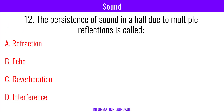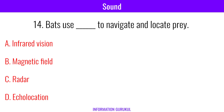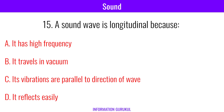The persistence of sound in a hall due to multiple reflections is called reverberation. Which device is used to measure sound level? Audiometer. Bats use echolocation to navigate and locate prey. A sound wave is longitudinal because its vibrations are parallel to the direction of the wave.